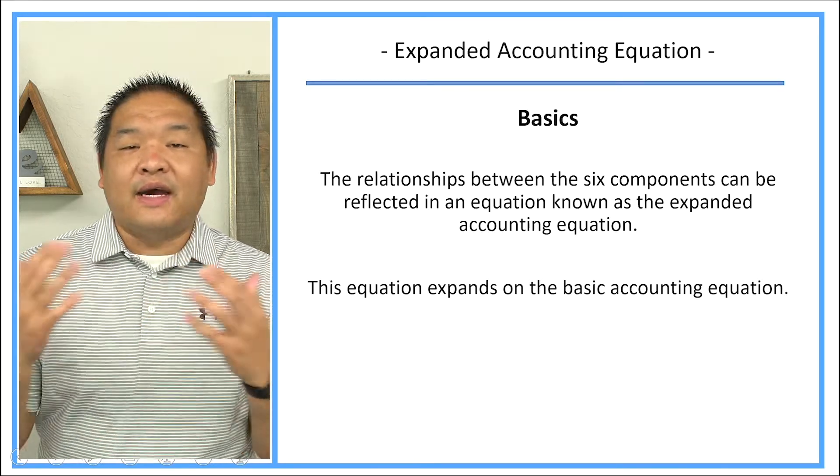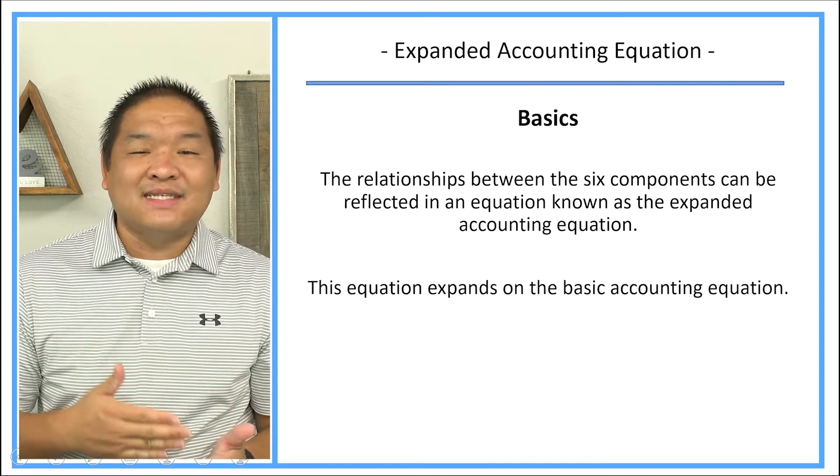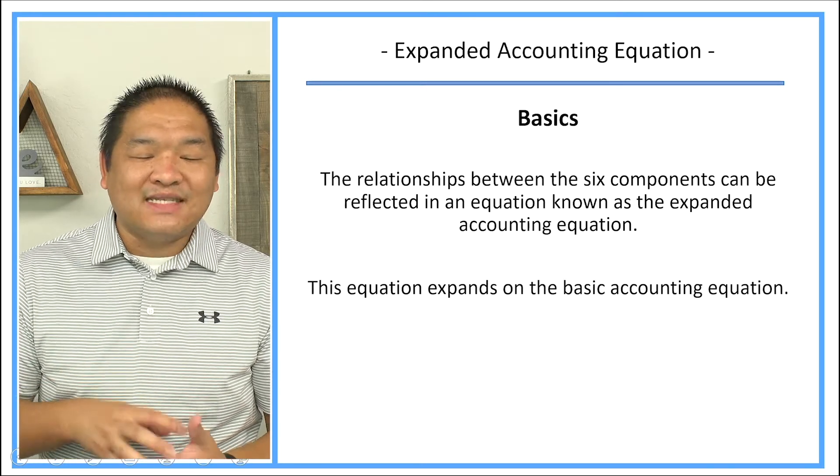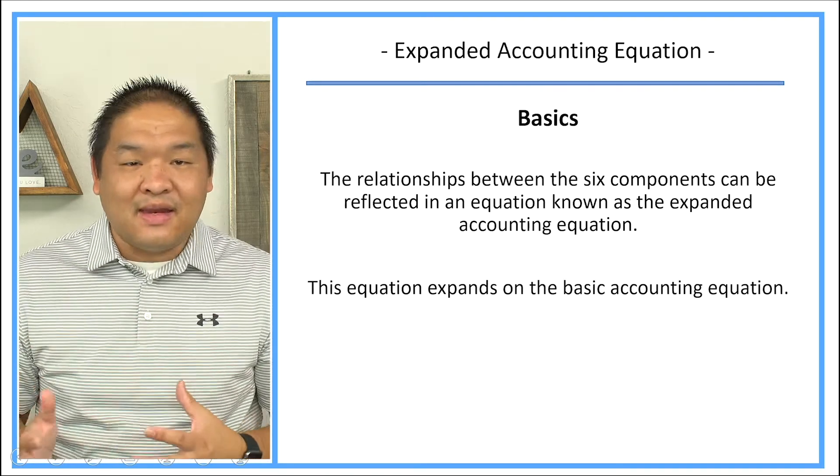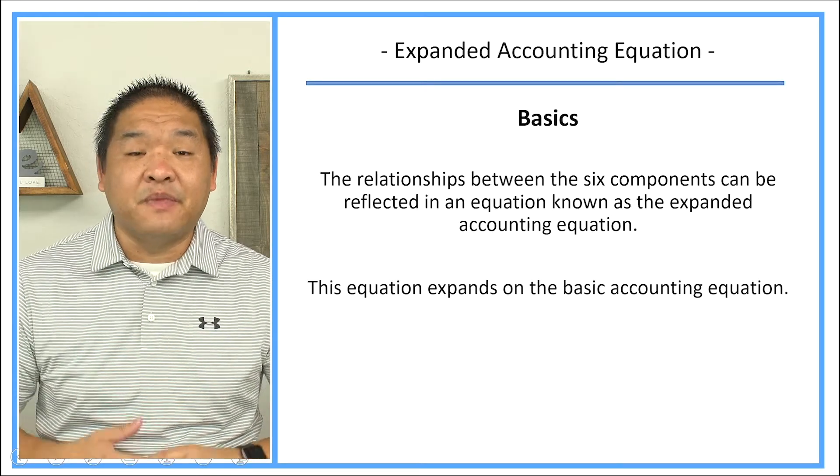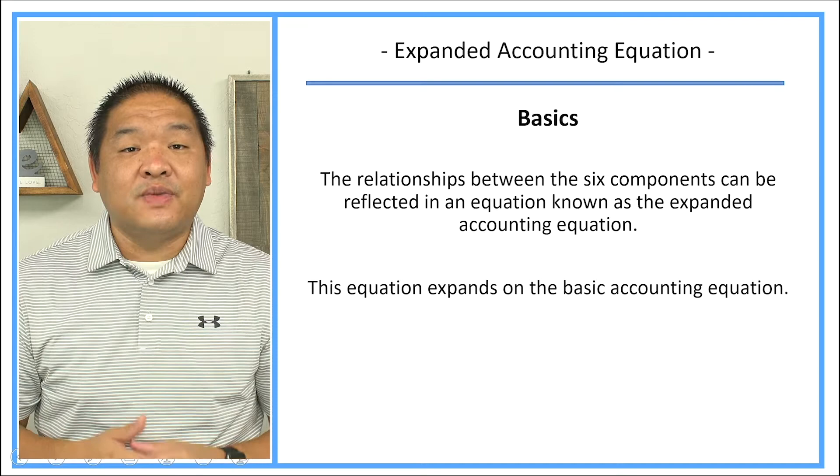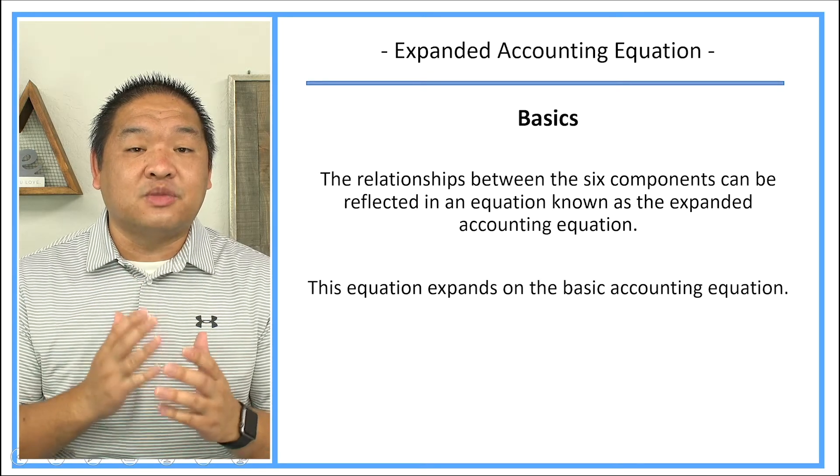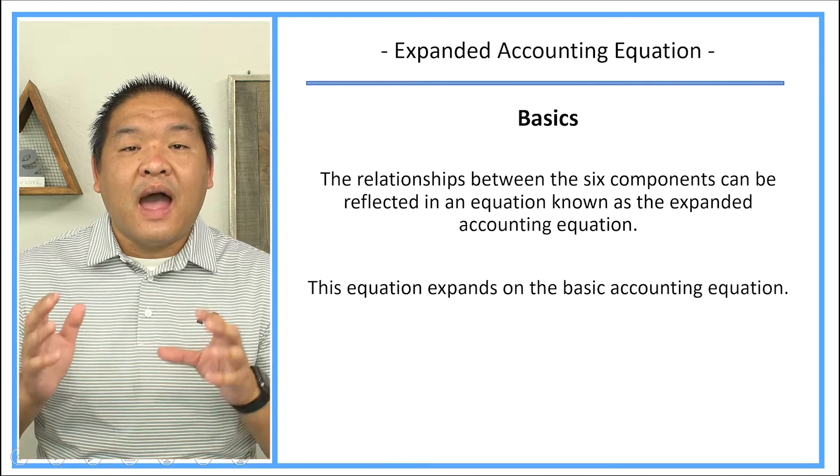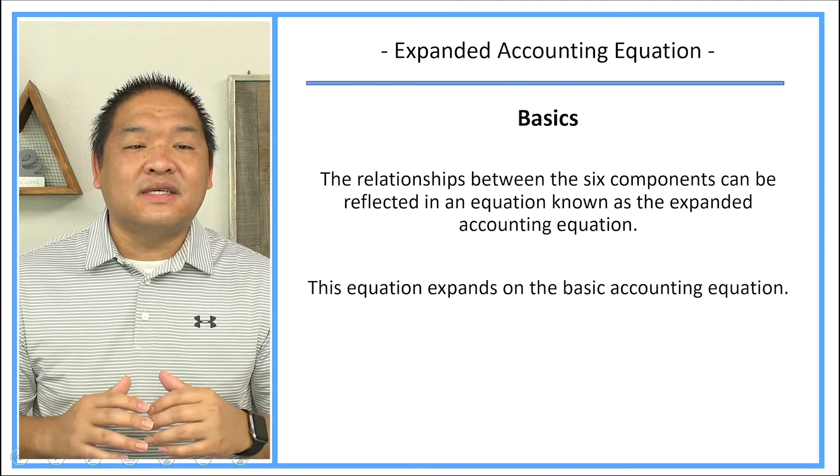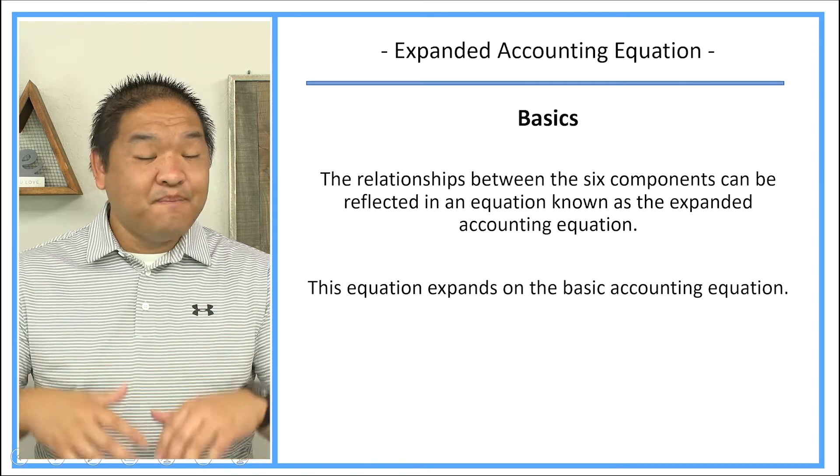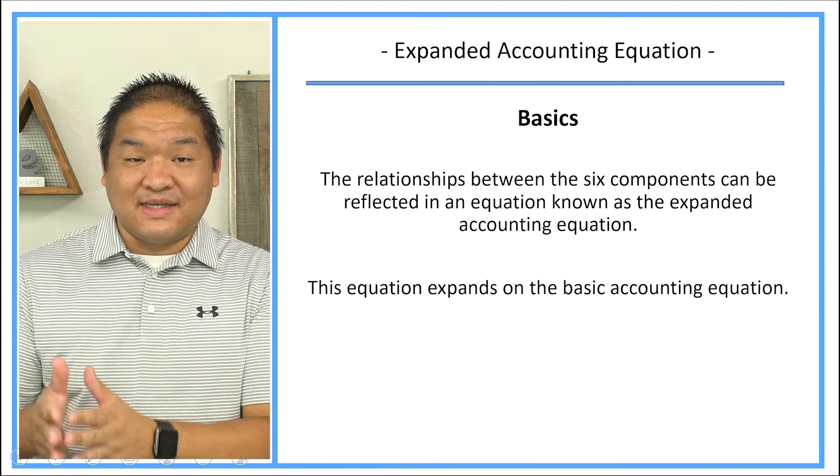And truthfully, I understand the basic accounting equation - assets equals liabilities plus owner's equity or stockholder's equity. But I still think the expanded accounting equation is much better than the basic accounting equation. Now we need the basic accounting equation because that's exactly how the balance sheet is prepared. Assets equals liabilities plus stockholder's equity. However, what it doesn't capture when we do journal entries is that it doesn't include revenues, expenses, and dividends.